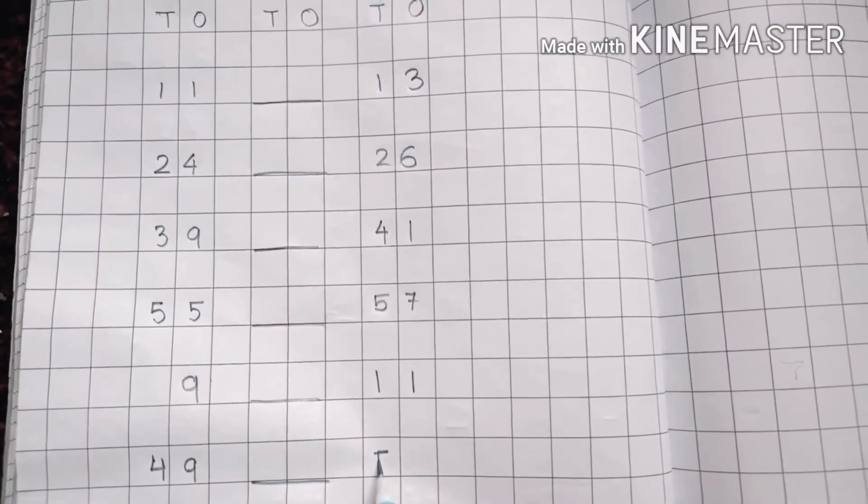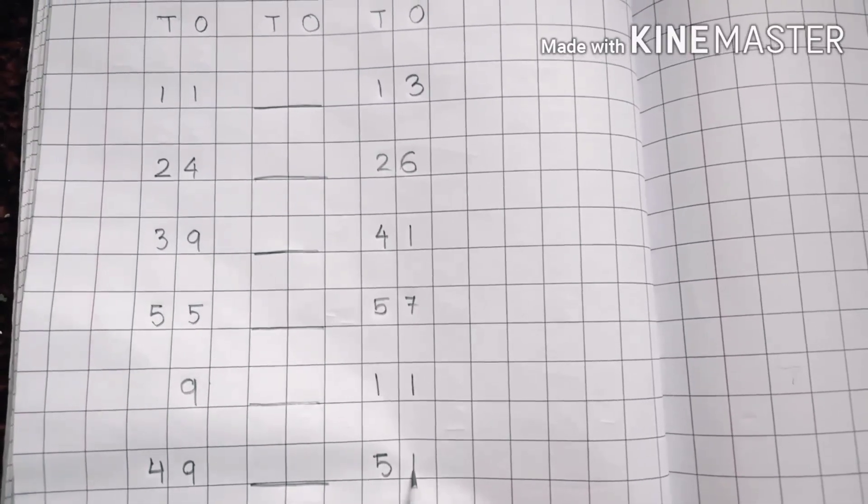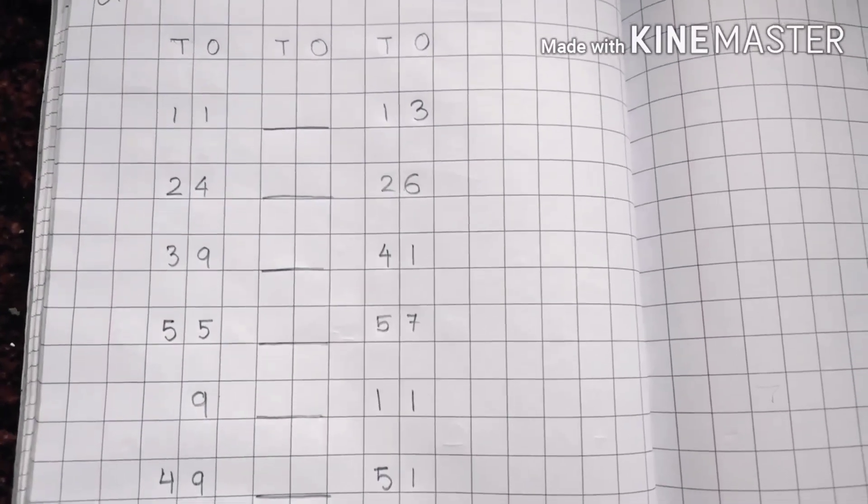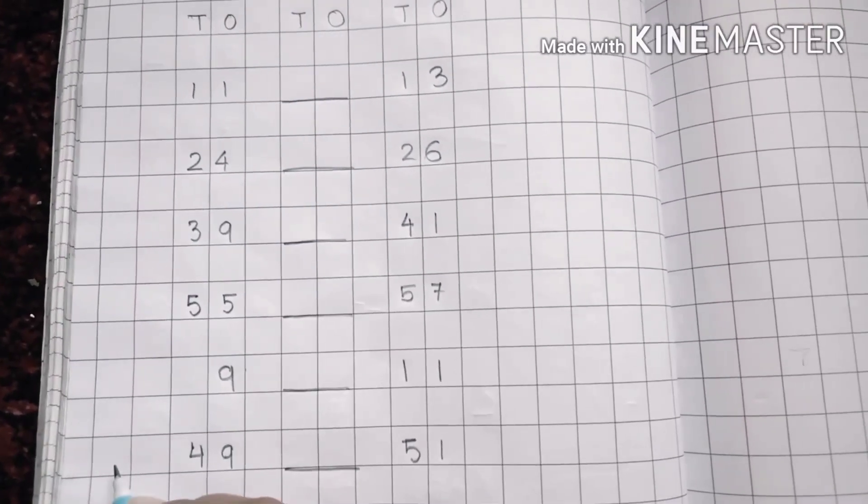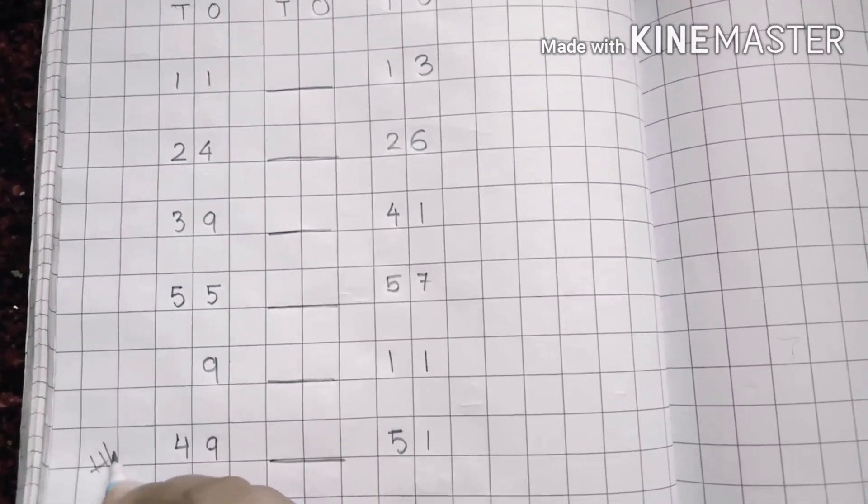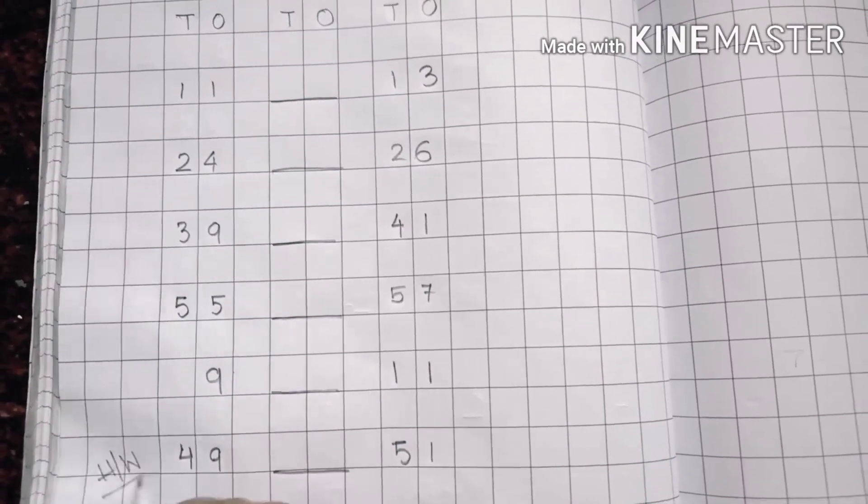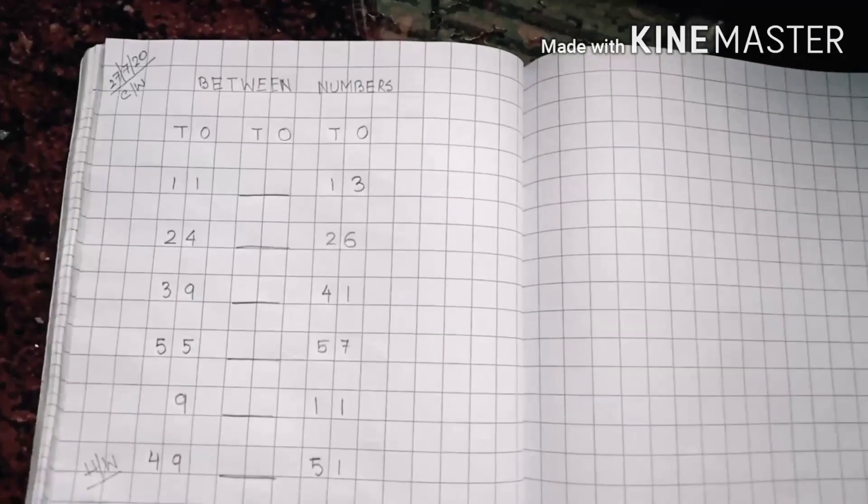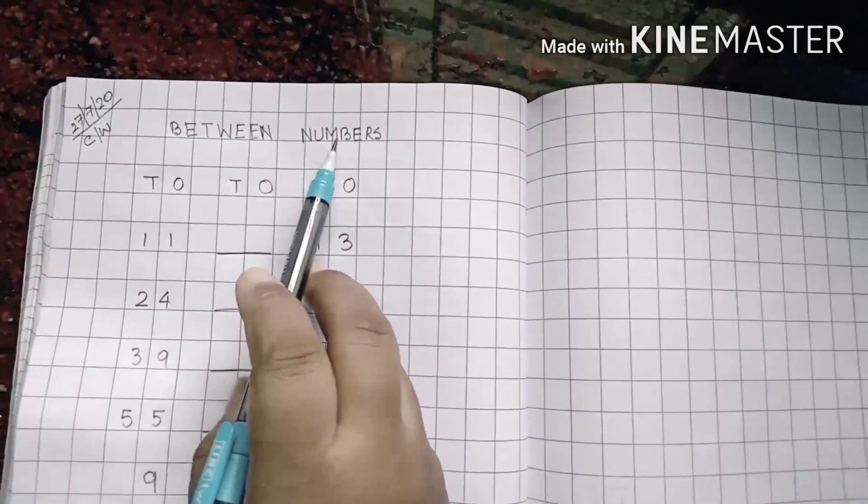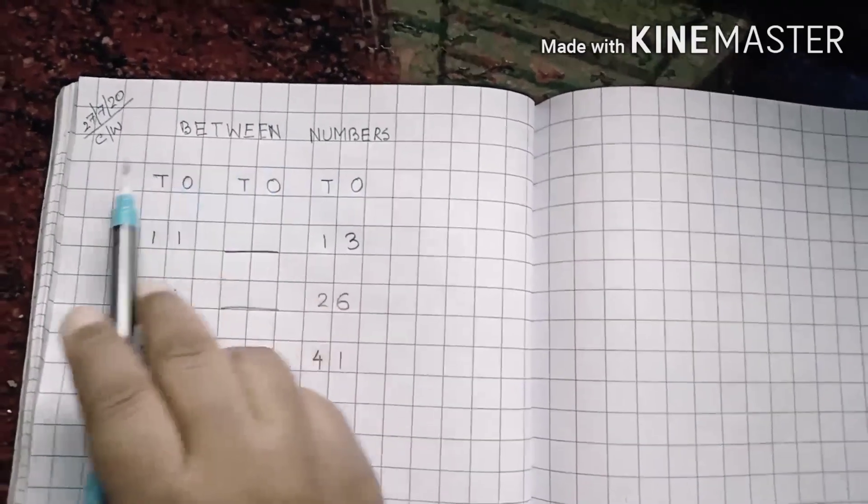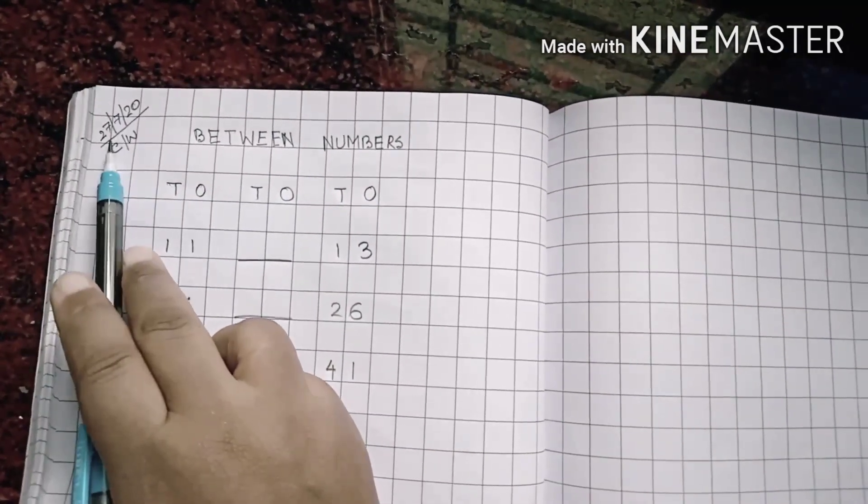Write here HW which means homework. You have to do the homework in the next page, remember children. So today we have done between numbers. Remember children, you have to write date, classwork, heading, between numbers, and everything by yourself, understood?